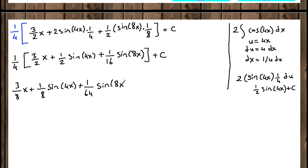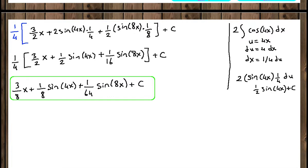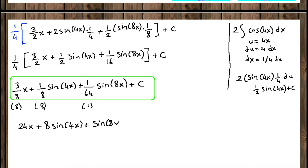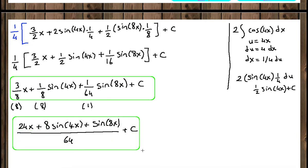This is your final answer — you can leave it here, or make it more compact using the least common denominator of 64. Expand each fraction: three over 8 times 8 gives 24x, one eighth times 8 gives 8 sine of 4x, and sine of 8x stays as sine of 8x, all over the common denominator 64, plus C. This is your final answer in more compact form. Thank you for watching, see you at the next video.